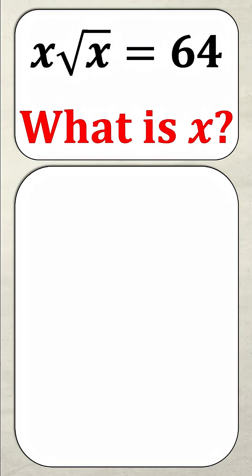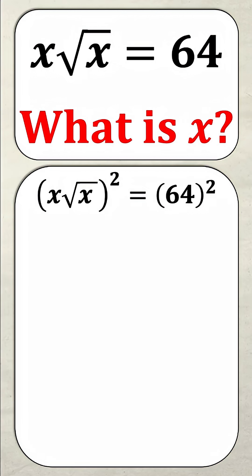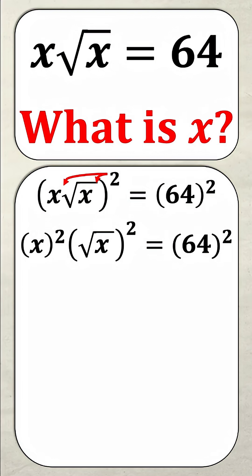The first thing I'm going to do is square both sides, and if I do that it's going to look like this. I have x root x squared, and I have 64 squared. Now remember, when I have a square on the outside like that, I actually have to square everything on the inside, so that exponent of 2 will be applied to the x and the root x separately. That gives me x squared times root x squared, which is again equal to 64 squared.